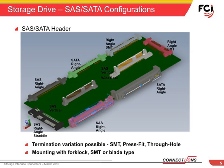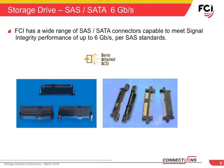Currently, the latest data speed requirement for SAS SATA interface is 6 Gbps. FCI has an extensive range of SAS SATA connectors that are capable of up to 6 Gbps data speed according to the SAS specification. FCI has conducted signal integrity testing in accordance with the SAS standard to verify connector performance. FCI is continually developing new high-speed SAS SATA connectors.